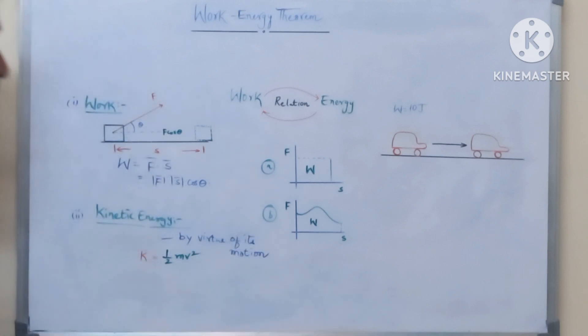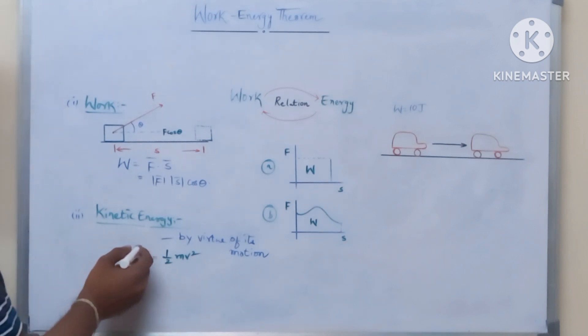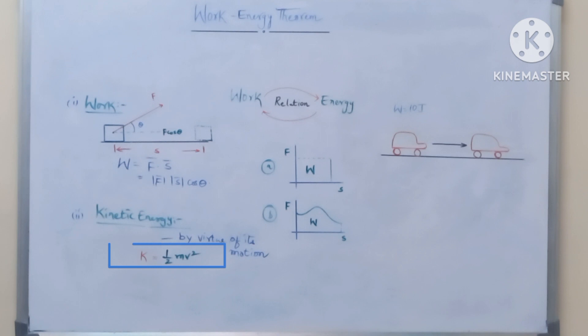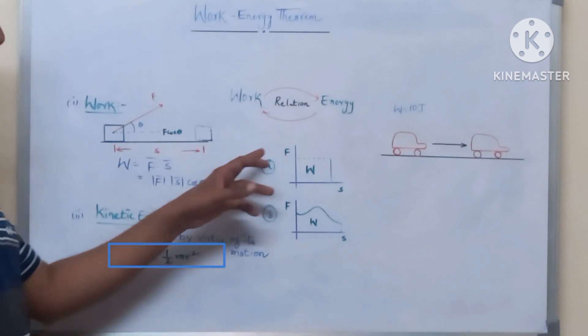Kinetic energy is called K, and its formula is K equals half mv squared. Now let us consider the force versus displacement graphs.